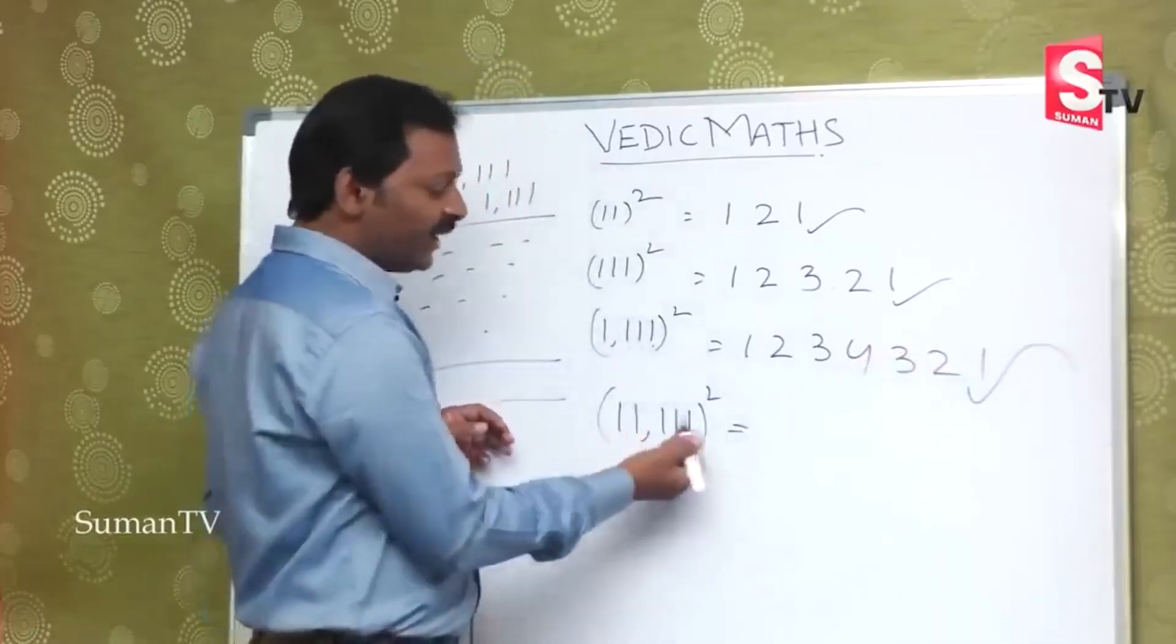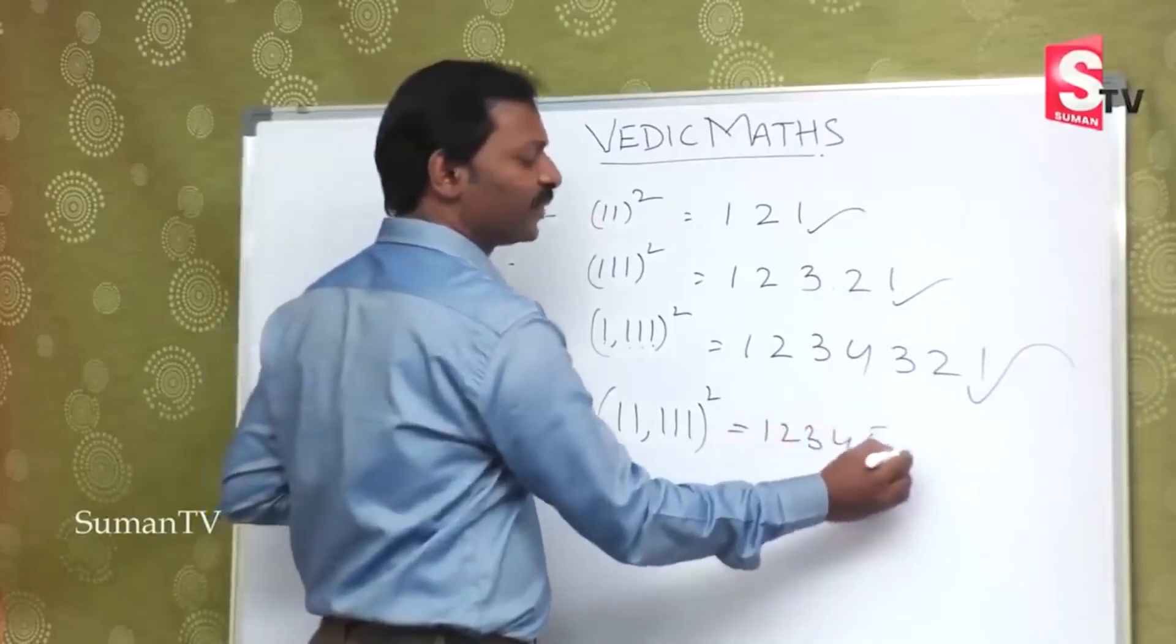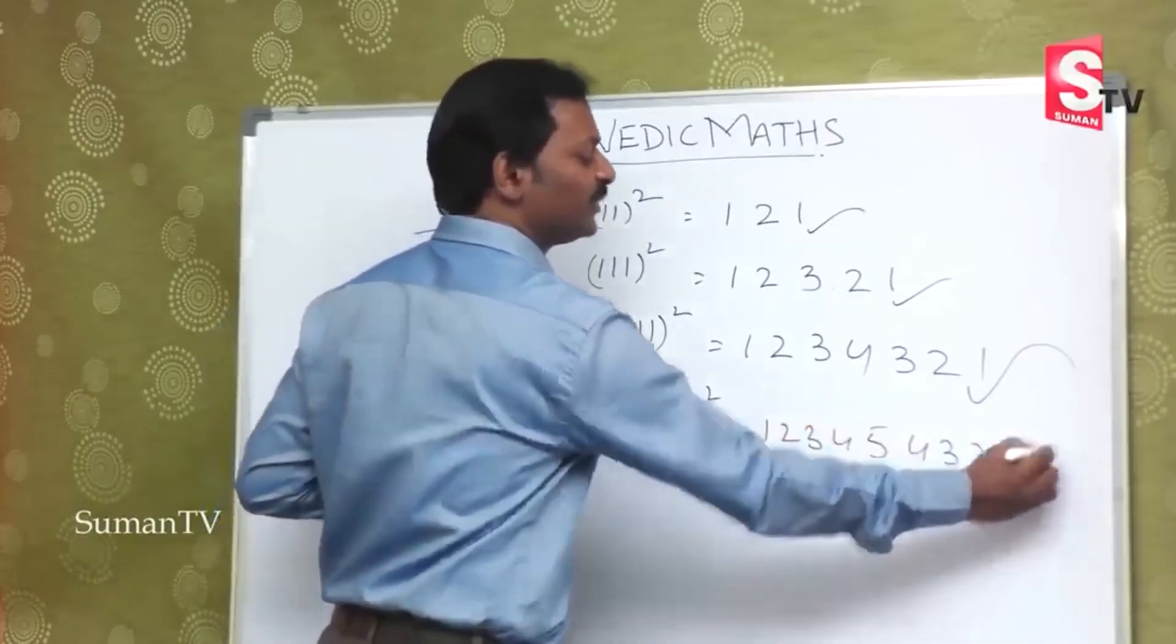That is why 5 digits are given. So 1, 2, 3, 4, 5, 4, 3, 2, 1. This is the answer.